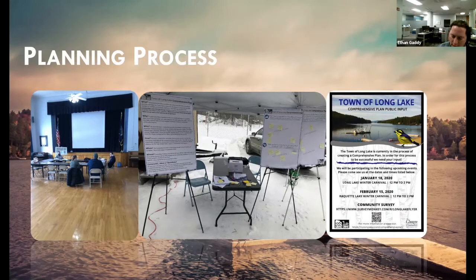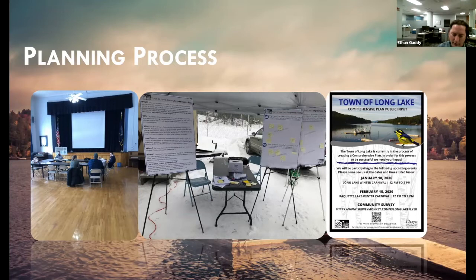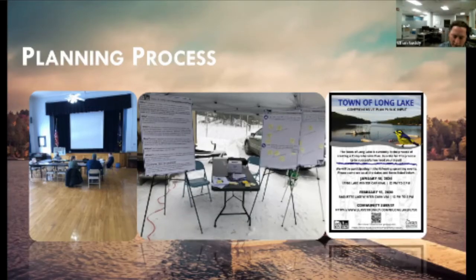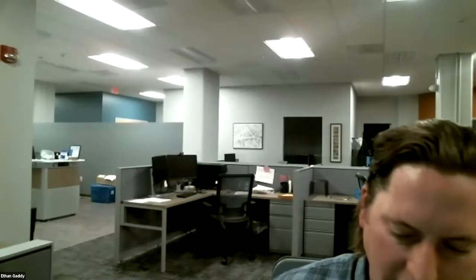First, the advisory committee identified stakeholders — people who could offer unique perspectives on the community. In person and via telephone, we reached out to dozens of people and had open-ended conversations about the current state of the community and what they viewed as opportunities for the future. These one-on-one conversations were really effective because there's far less pressure than having to stand up in a public meeting. We worked with dozens of stakeholders identified by the advisory committee over the course of a few months to have one-on-one calls.